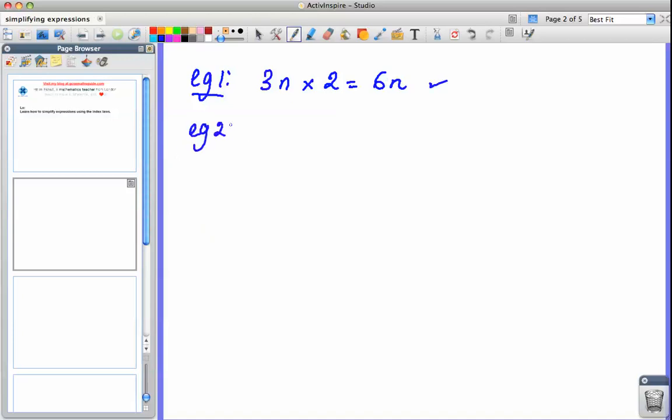Example number 2. Let's say we had 10a and I wanted to divide that by 2. Again, form the operations with the numbers first. So do 10 divided by 2 which gives me 5. And here we've got the a left so we're going to have just 5a.